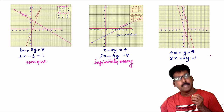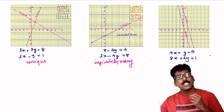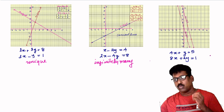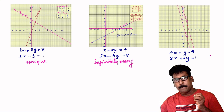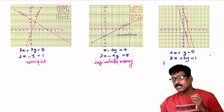The third pair was 4x plus y equal to 5 and 8x plus 2y equal to 1. For this you got a parallel line, and you can say that pair of equations has no solution.